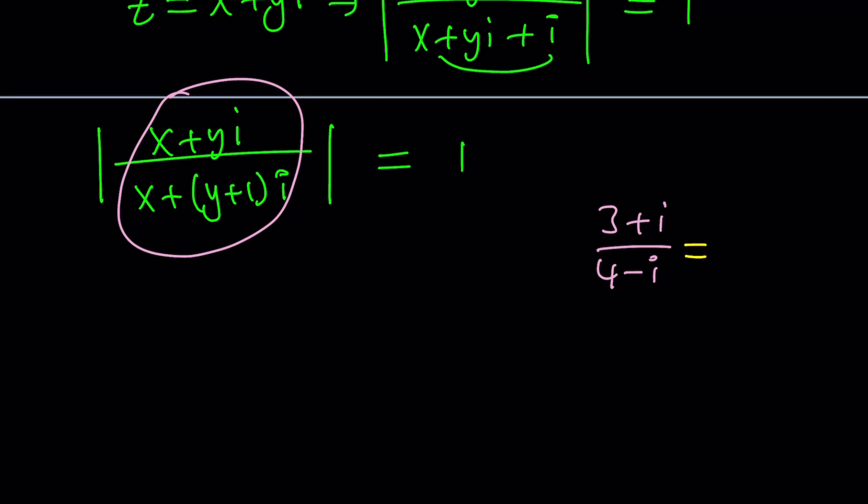We could set it equal to a plus bi, which is the name of this channel by the way, and then cross multiply and solve for a and b. But that's such a long method. That would be a third method which I would never recommend. Here's what we're going to do instead. We're going to multiply by the conjugates because that's what makes this simpler. That's going to turn the denominator into a real number.